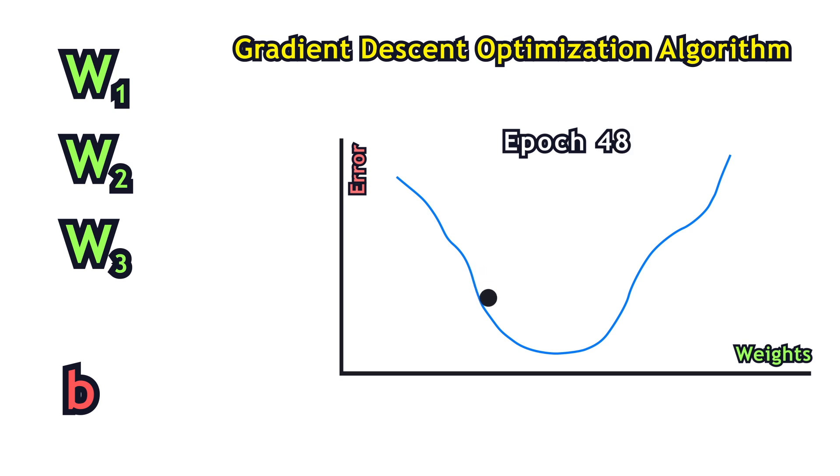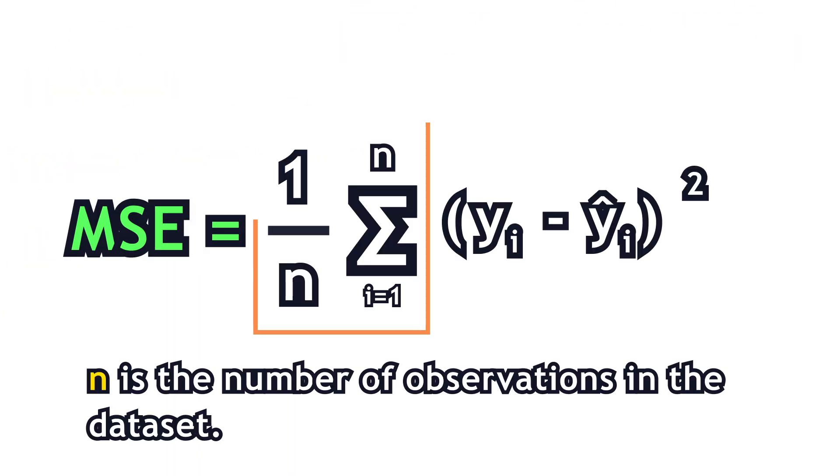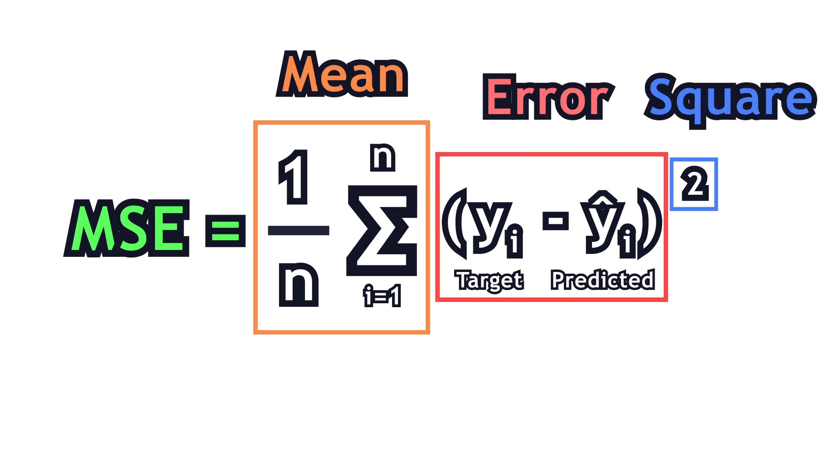The cost function that explains the error of our model is often the mean squared error. However, there are still other common ones. Mean squared error compares the actual label with the predicted one and squares the error, which both makes the value positive and magnifies the larger errors.